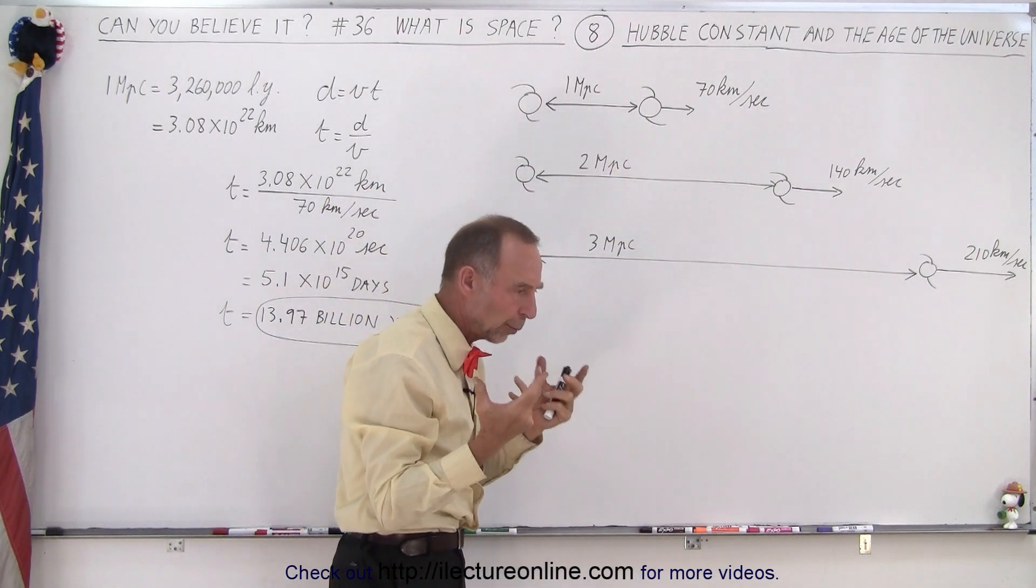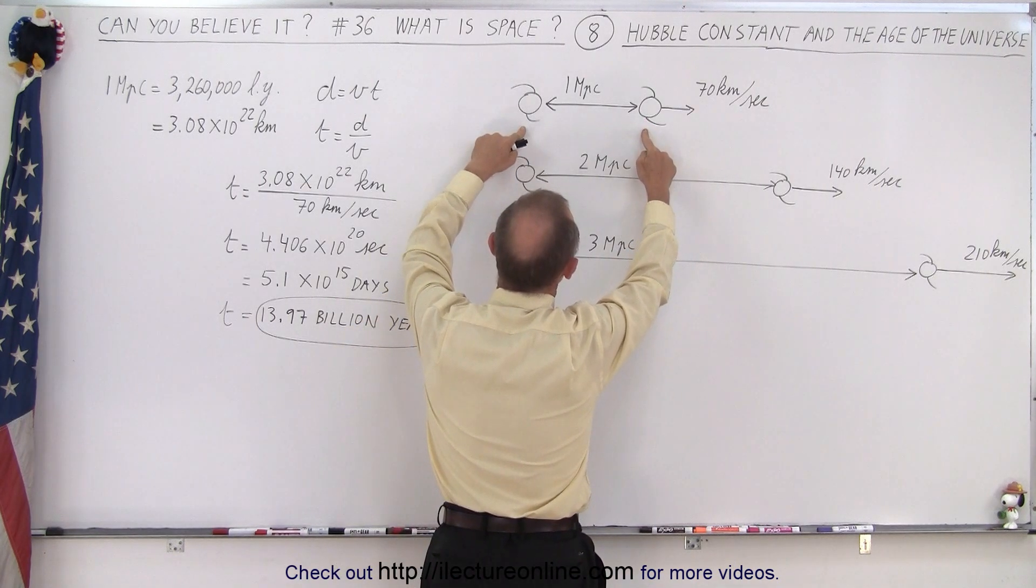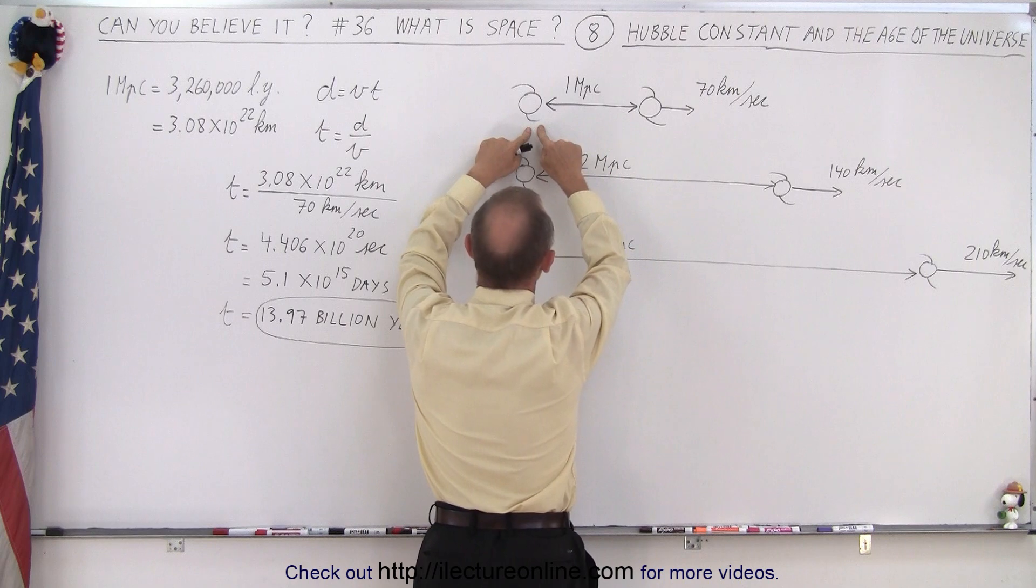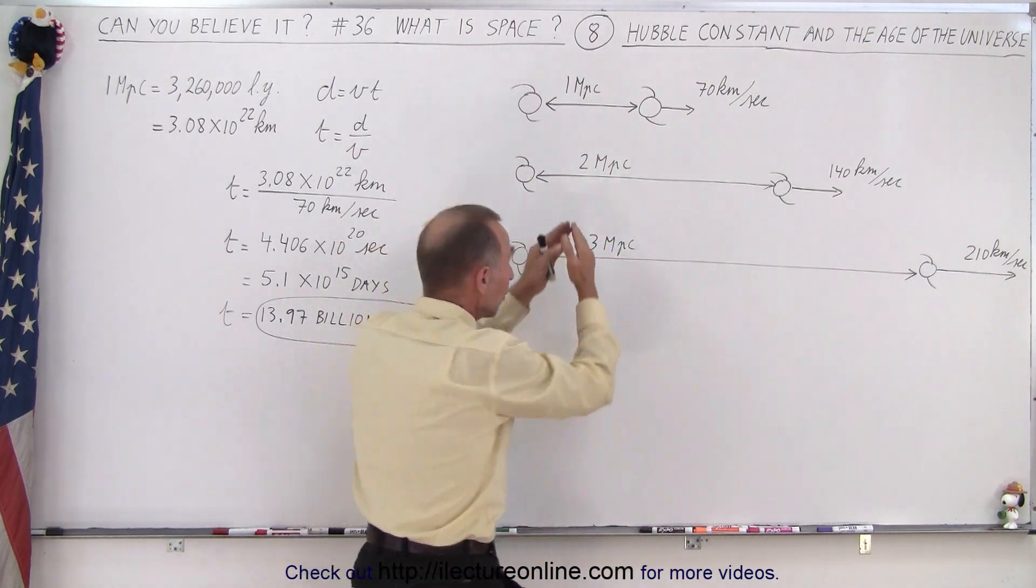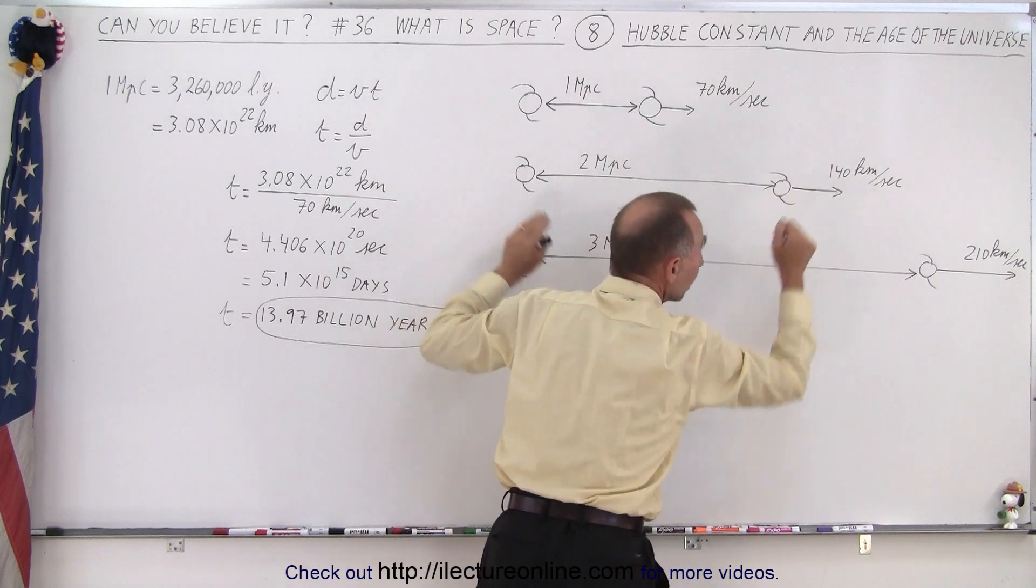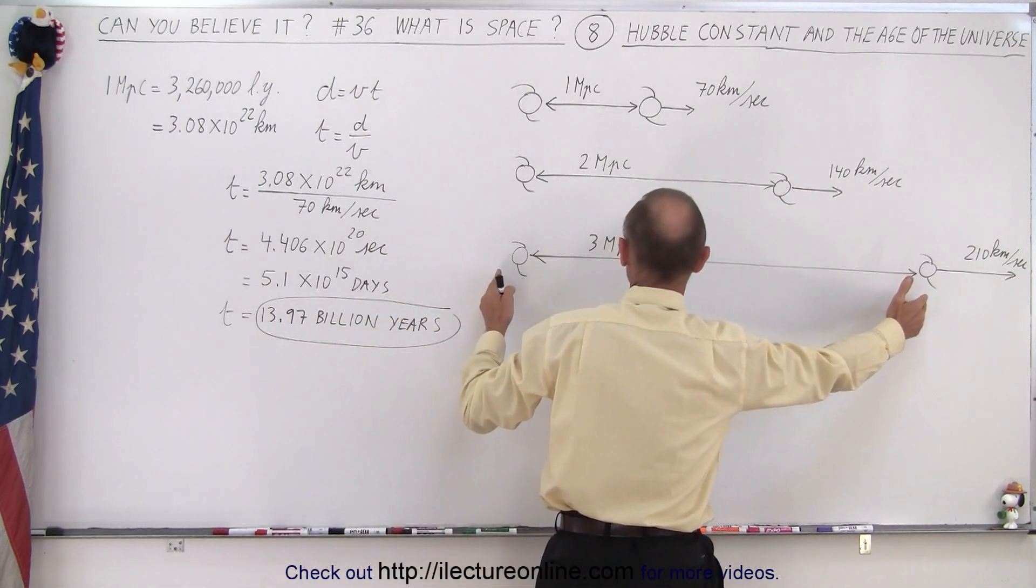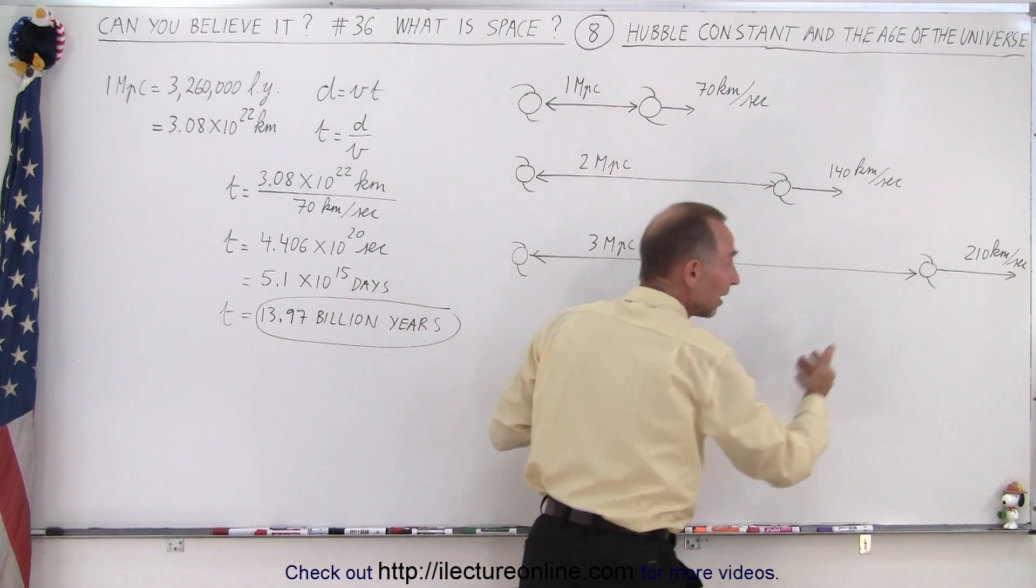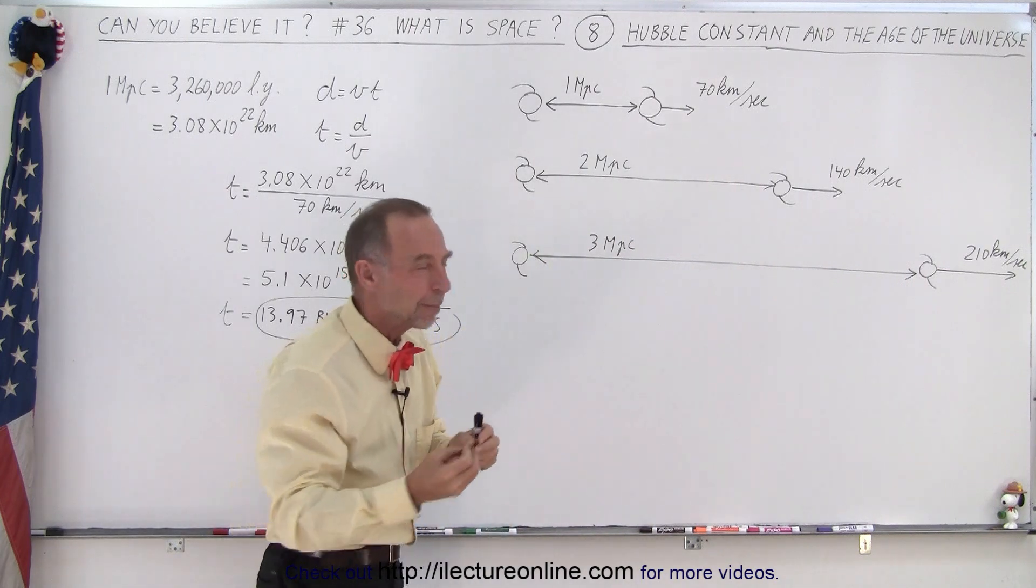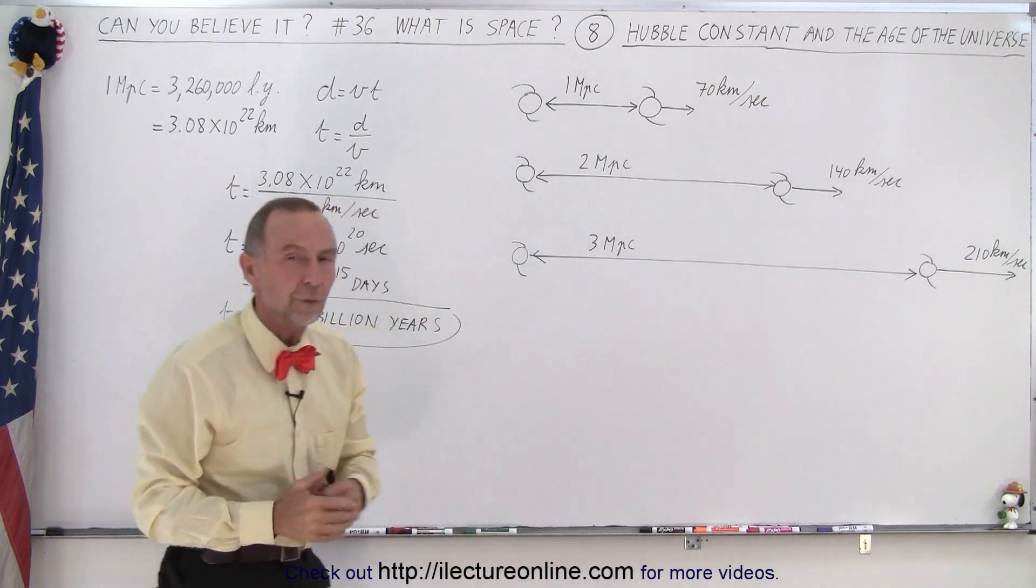And then you realize that, wow, it would take the exact same amount of time for these two galaxies to move away from each other if they started together as it did for these two galaxies. Because even though the distance is twice as much, they're moving twice as fast. And in this case, when these two galaxies are three times as far away from each other, but since they're moving three times as fast, they would have taken the exact same amount of time to move to their current position, if they were really really close before.